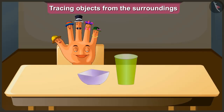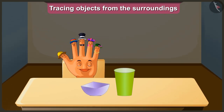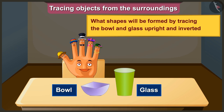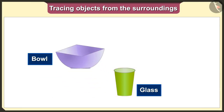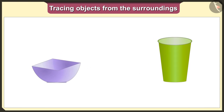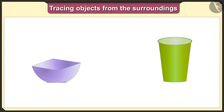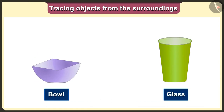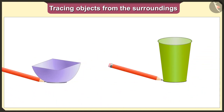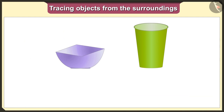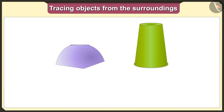Now let's look at another example. Which shapes would we get if we put this bowl and glass straight and upside down and then trace them? If we keep the bowl and glass straight, their base is a circle. So if we keep the bowl and glass upward and trace them, we will get the circle shape.